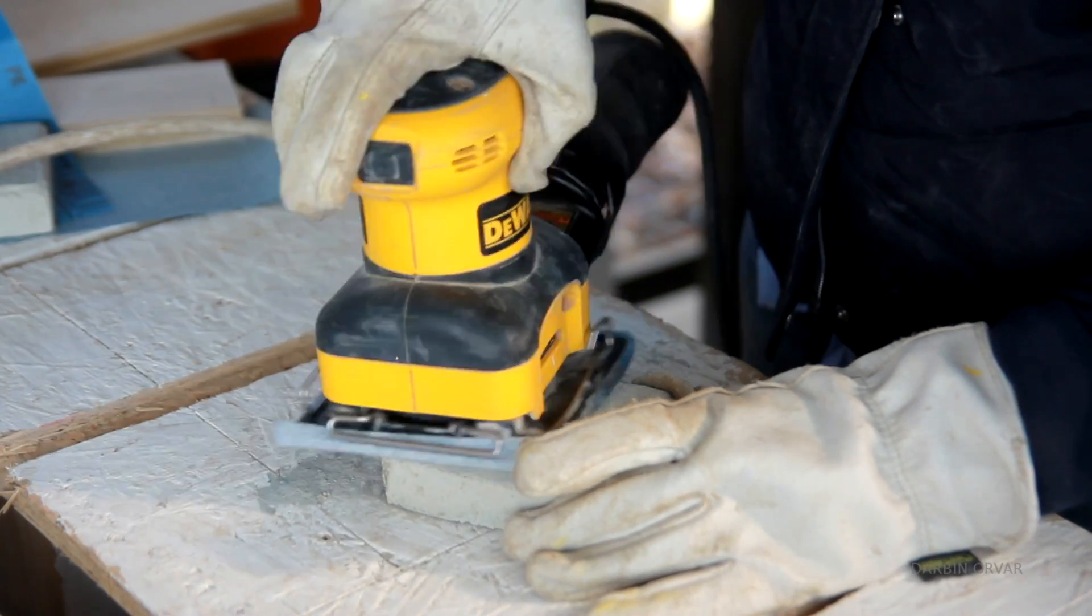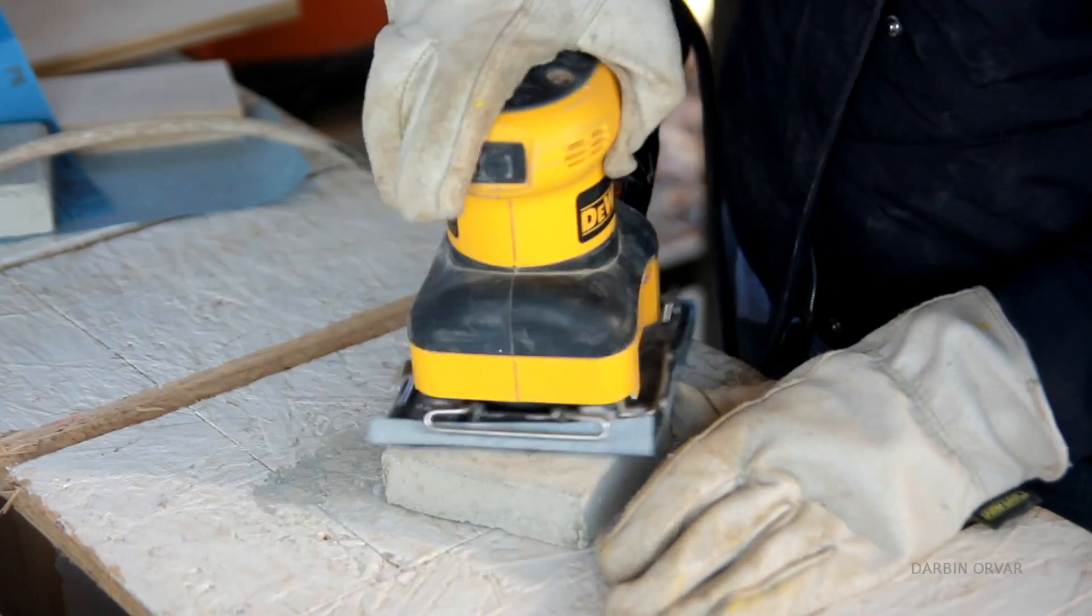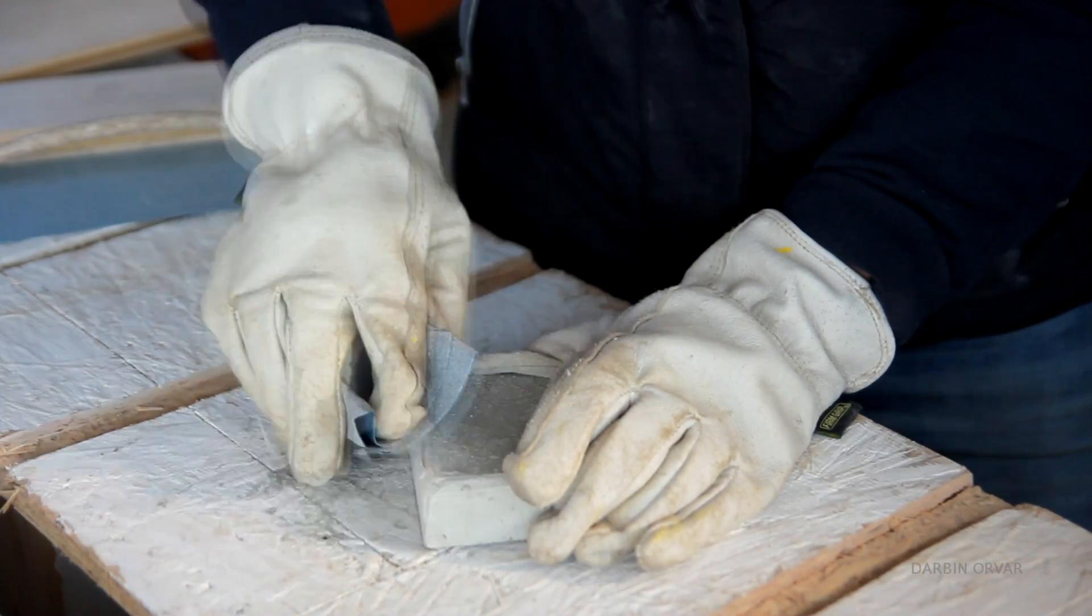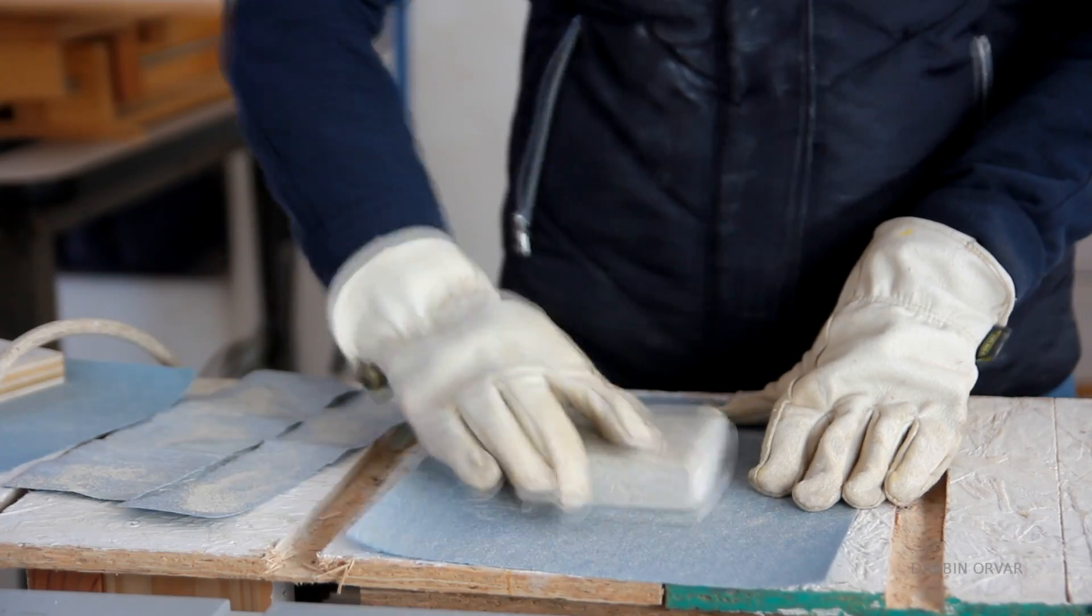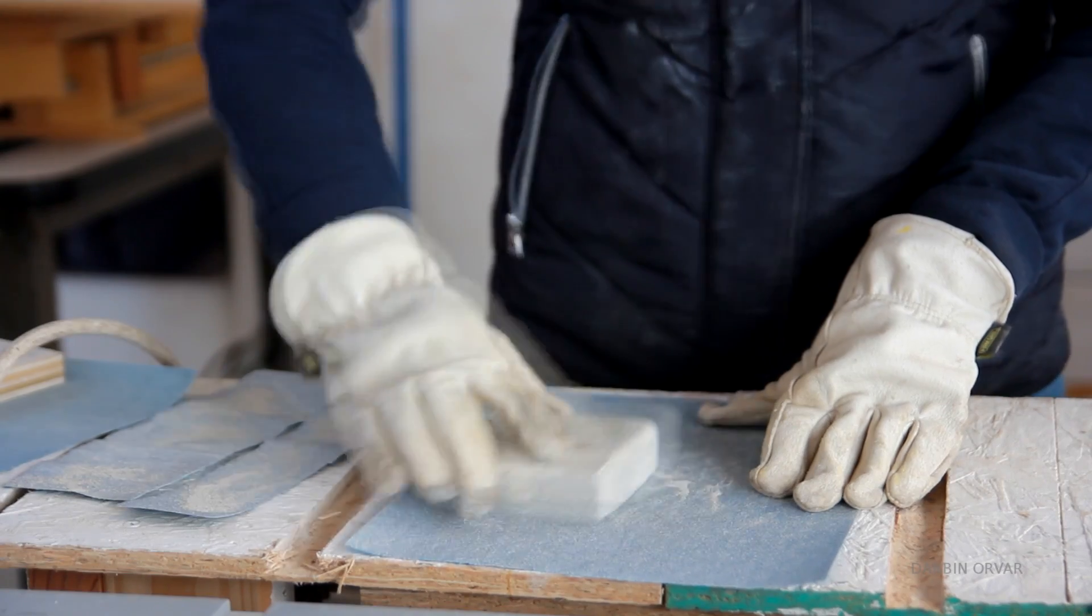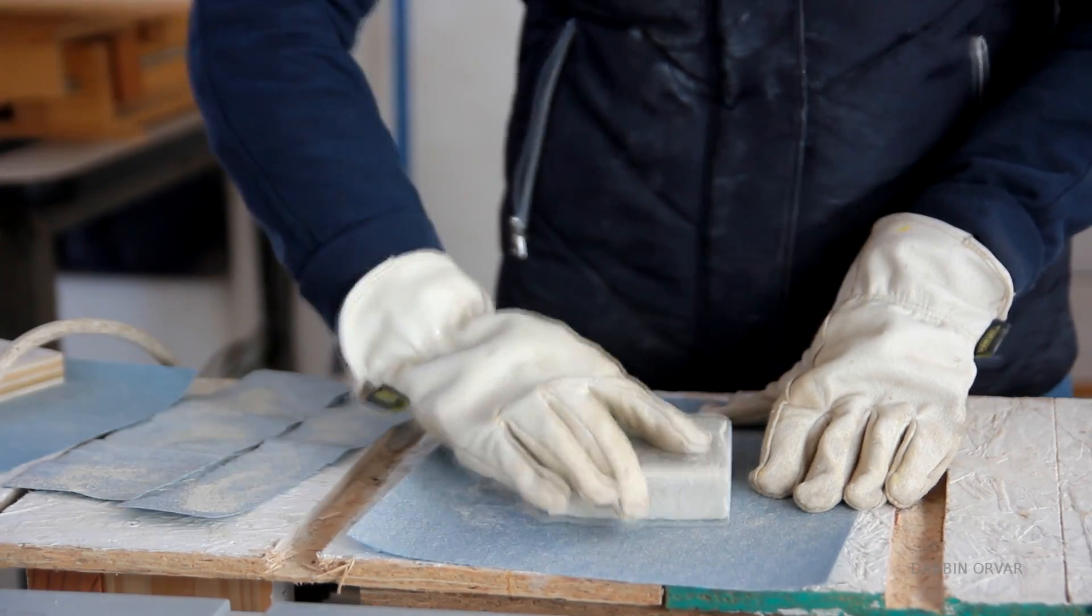Once I had the blocks, I sanded them. First, I used a sander, but then I moved on to sand in my hand. And I also found that the blocks made with wetter concrete didn't need nearly as much sanding. They were pretty smooth already.